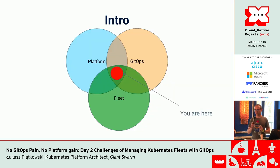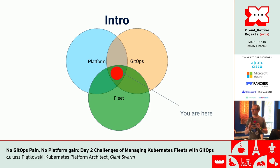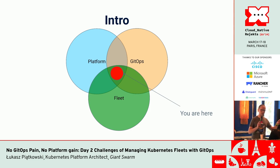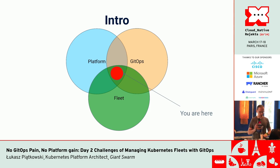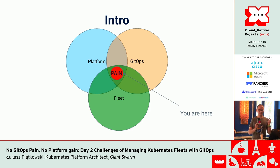As you might get from my very long title of the presentation, I'm going to touch mainly three areas, or actually the intersection of them: the platform, GitOps, and Fleet. Let me briefly introduce these three areas because in the intersection where we are, there is something and this can be pain — and I hope that I can help with this pain at least a little bit.